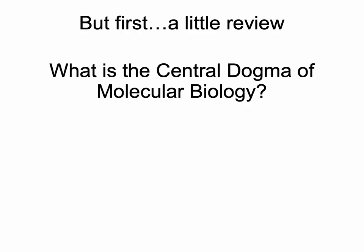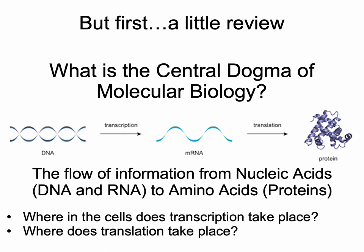First, a little review, because this is going to come up again later in this lecture. I really want you to know the central dogma of molecular biology. Pause here and think about how genetic information flows — this is what we covered in the microbial genetics lecture. The central dogma states that the flow of genetic information happens in one direction: DNA is transcribed into mRNA, which is then translated into protein.